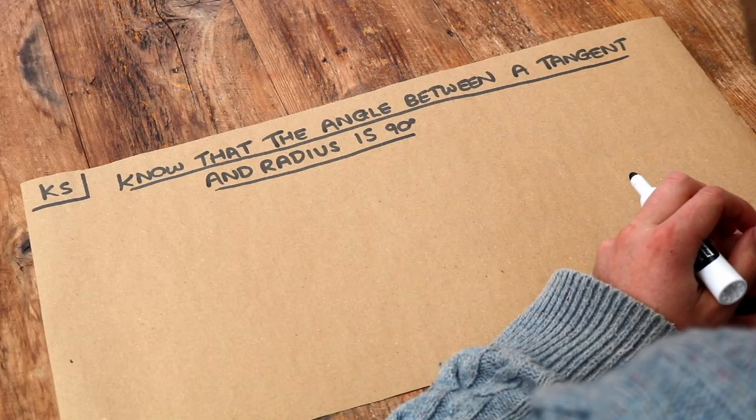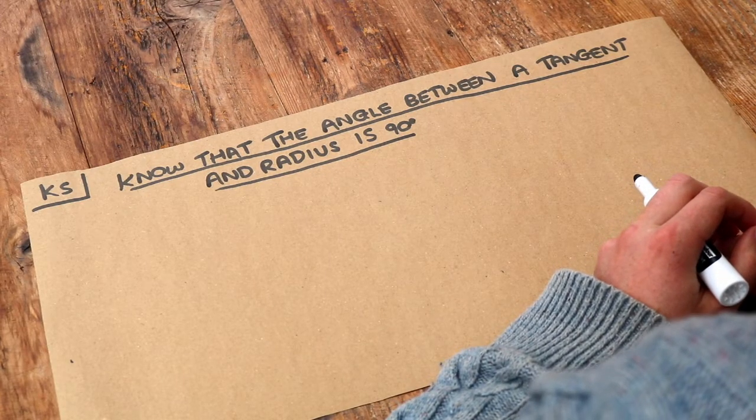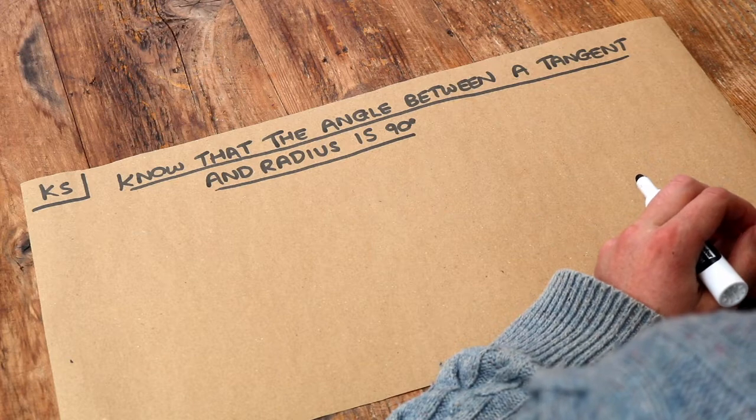Hello and welcome to this Dodge Rods Maths key skill video on knowing that the angle between a tangent and a radius is 90 degrees.